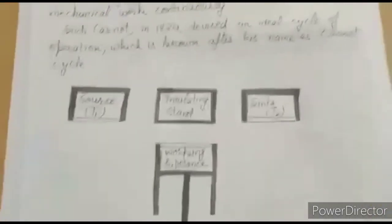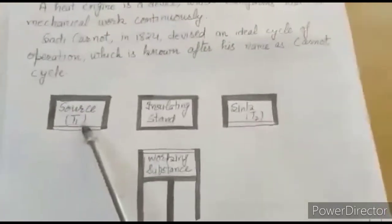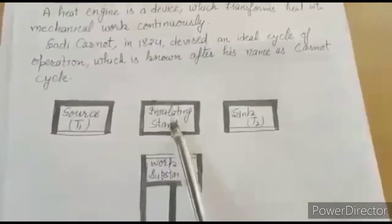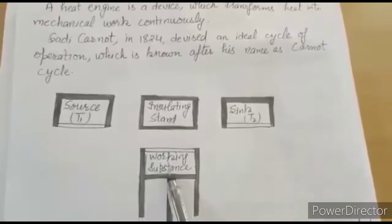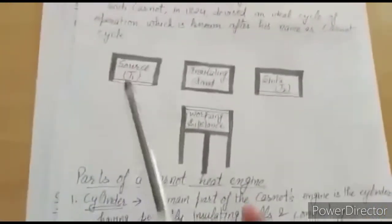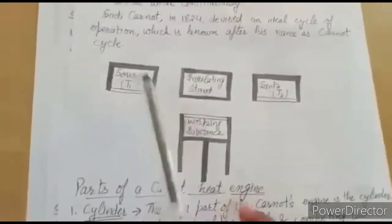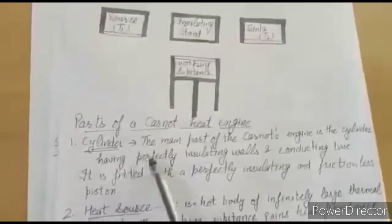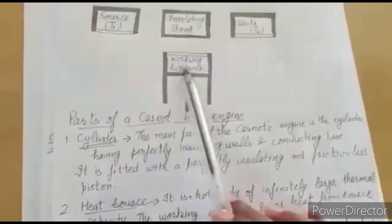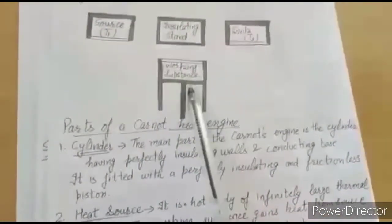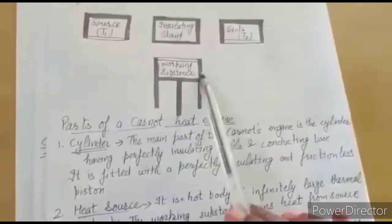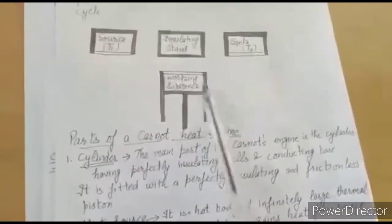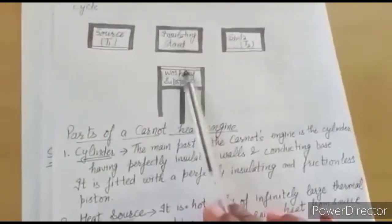The different elements used in the Carnot engine are: source, insulating stand, sink, and working substance. The main part is the cylinder — having perfectly insulating walls and a conducting base.